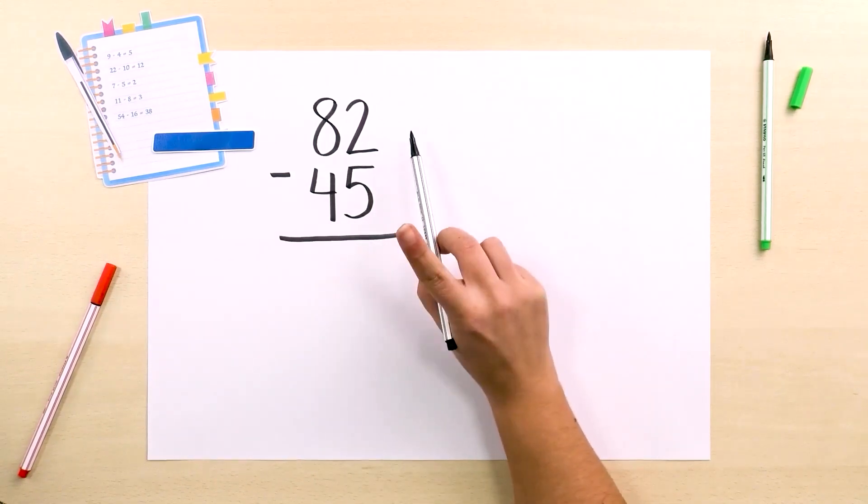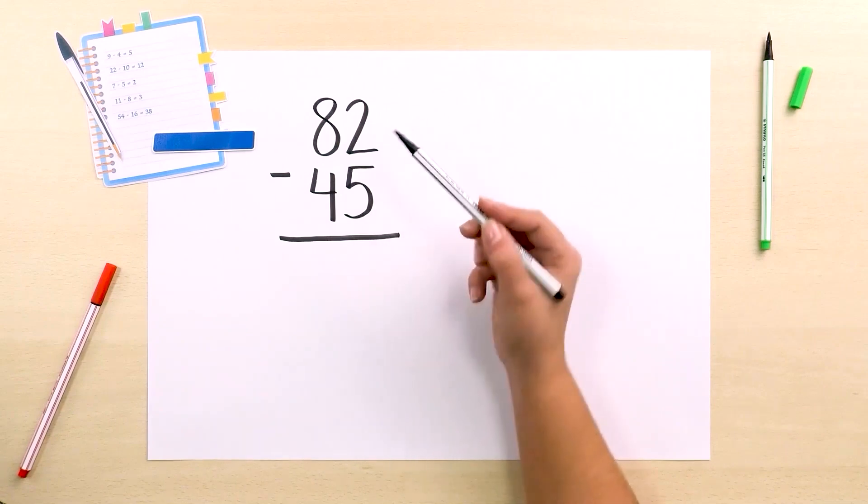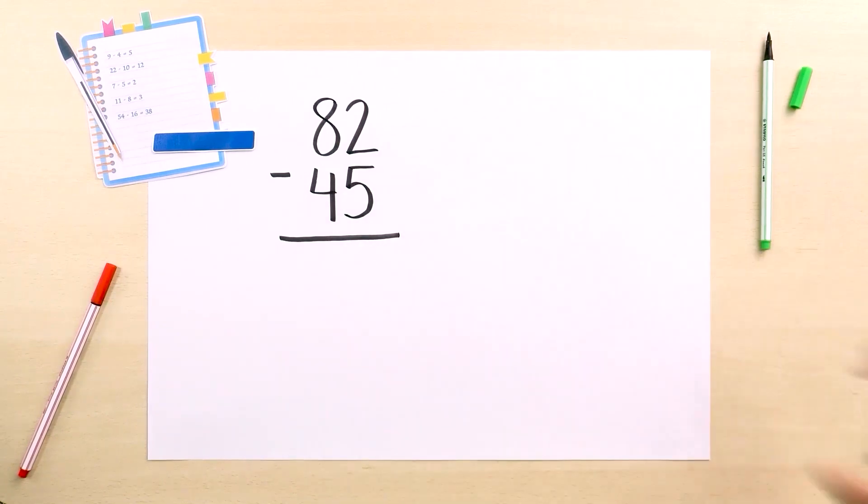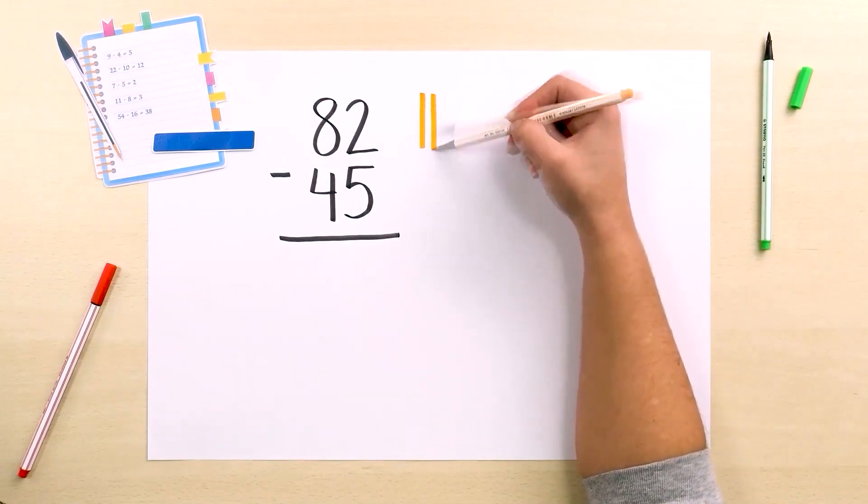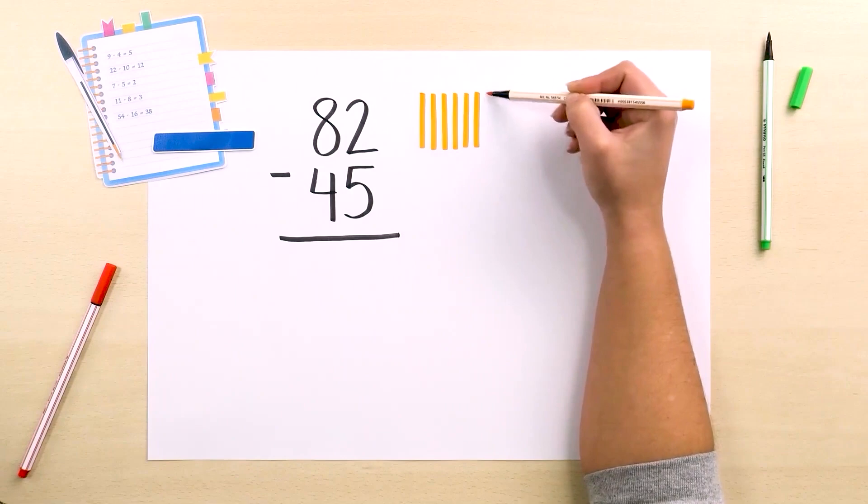We can see right away that we cannot remove 5 cubes if we represent 82 using 8 bars and 2 cubes. So we can directly represent 82 using 7 bars and 12 cubes.